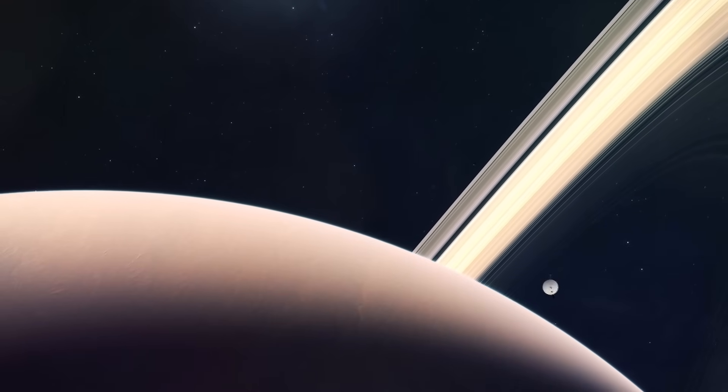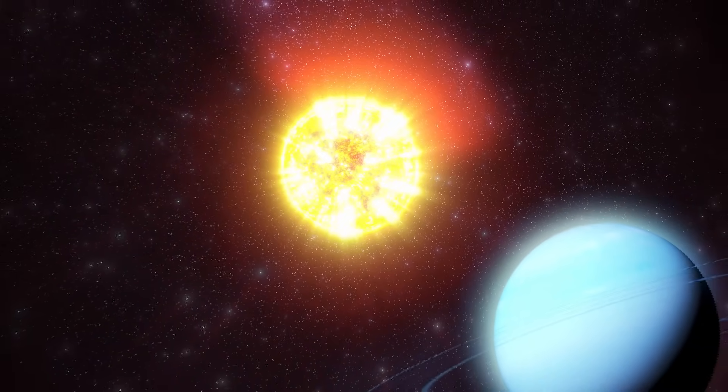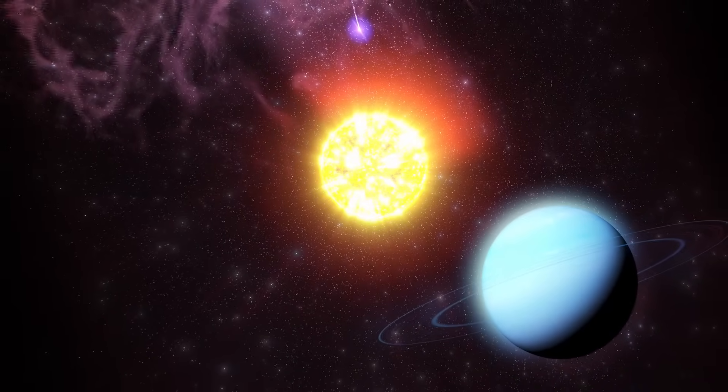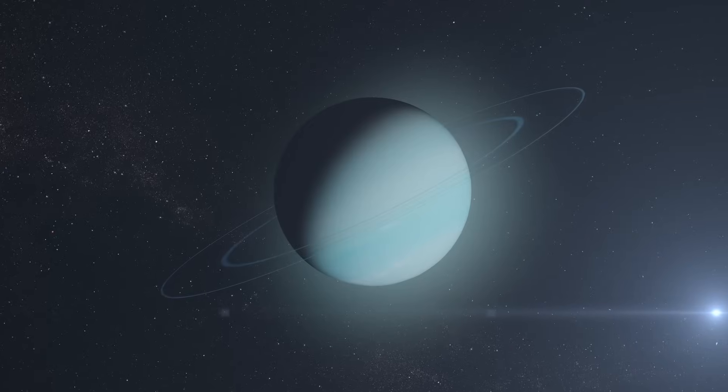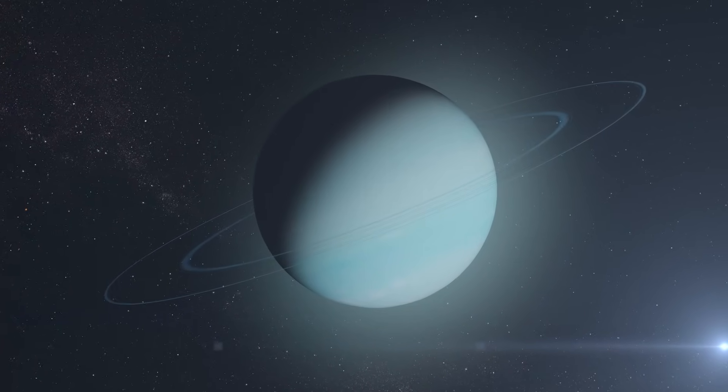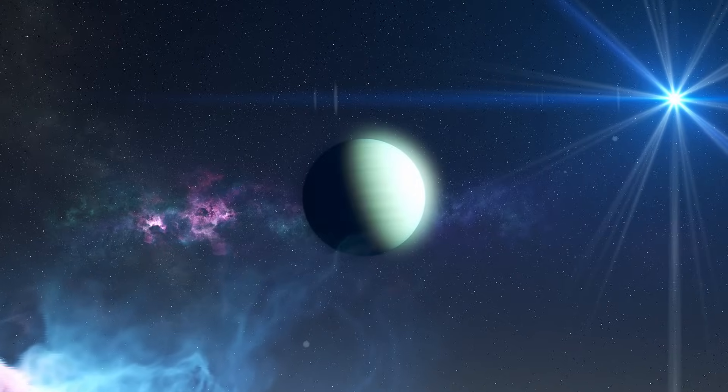But this creates a puzzle. The extreme solar heating at the poles should drive incredibly violent weather. Yet when Voyager 2 flew by, the planet was eerily calm. Even stranger, massive storms were finally seen in 2014, a full seven years after the sun was shining most directly on the equator.